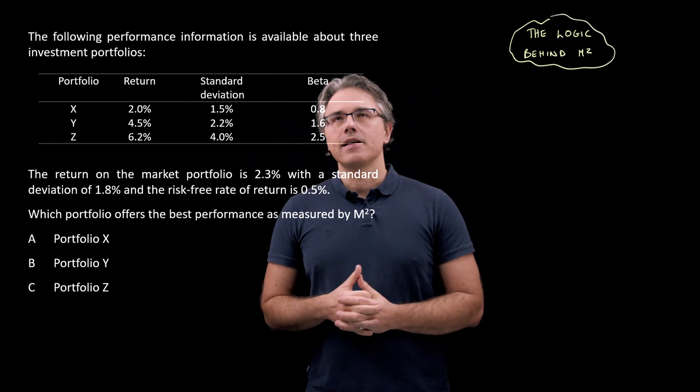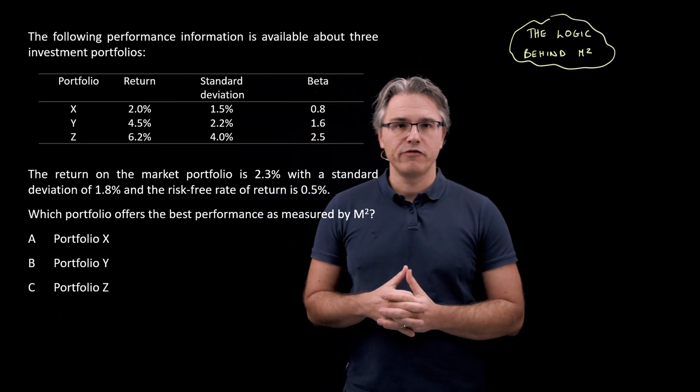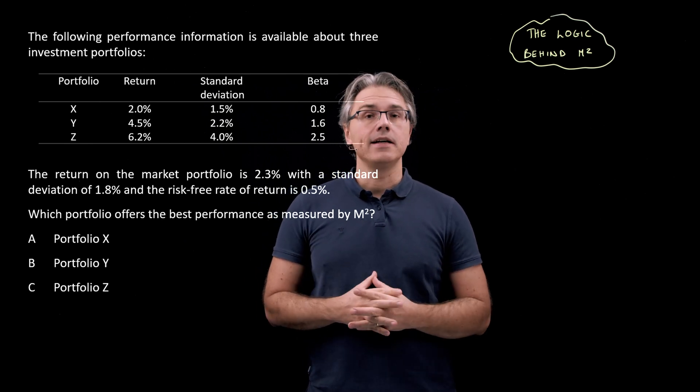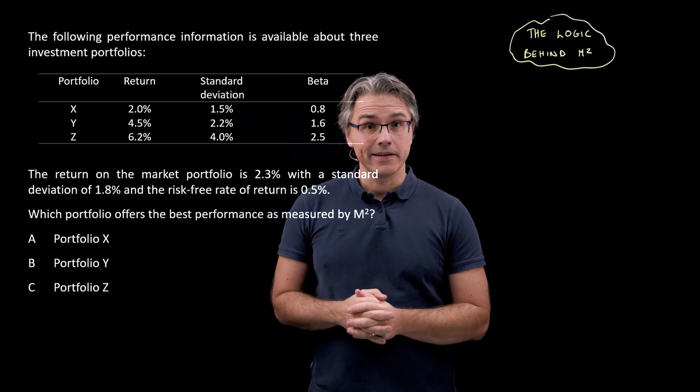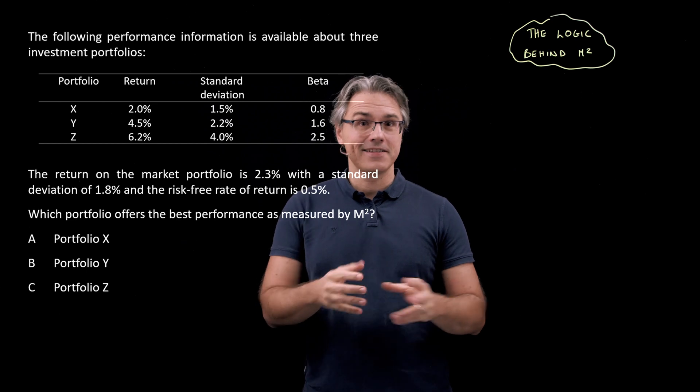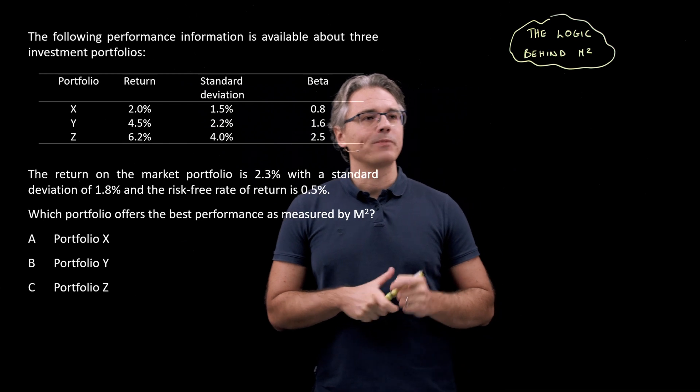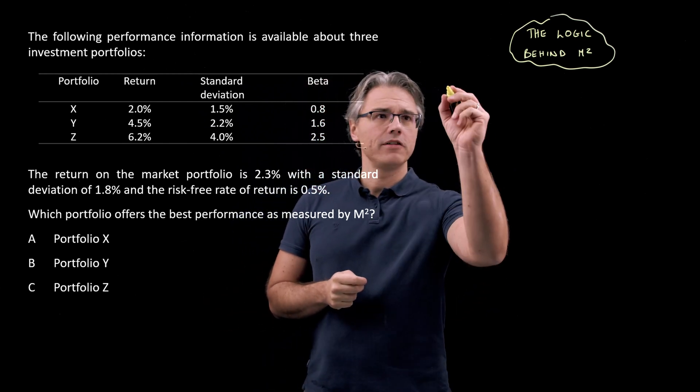M-squared is a performance ratio or a performance metric which was derived by Franco Modigliani and his granddaughter Leah Modigliani, hence M-squared because of the two Modiglianis.